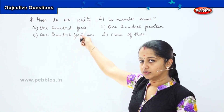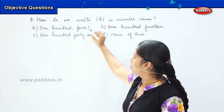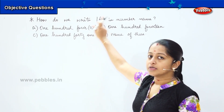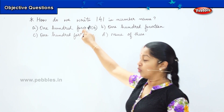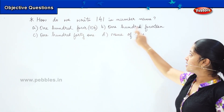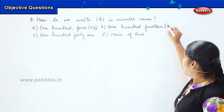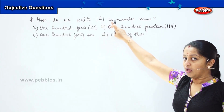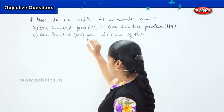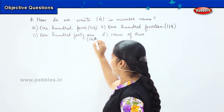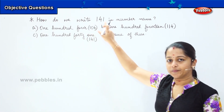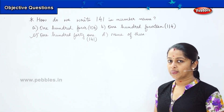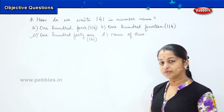Is it 104? No — 104 would be written as 1, 0, 4, but the question asks for 141. The second option, 114, does not match either. The third option, 141 — does this match our question? Yes! So option C is the right answer.